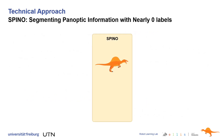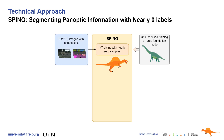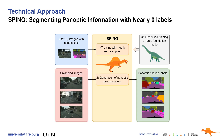In our method Spino, we leverage visual features from a large foundation model trained only with RGB images. In a given domain, we send 10 images to an expert annotator and train our pseudo-label generator. For the remaining images, we create high-quality panoptic pseudo-labels in an offline manner. Finally, we can train any existing panoptic segmentation model with these pseudo-labels to allow real-time inference and further boost segmentation quality.